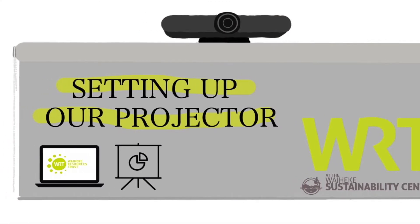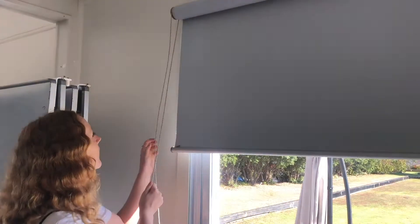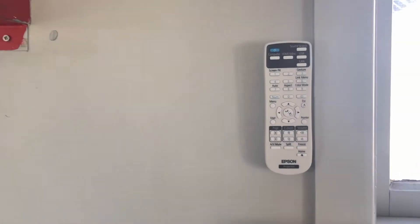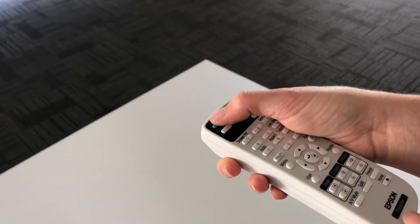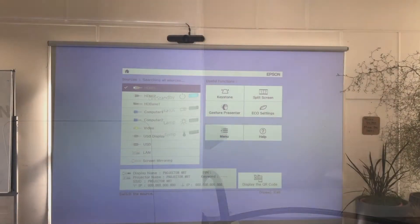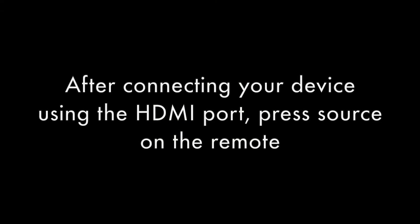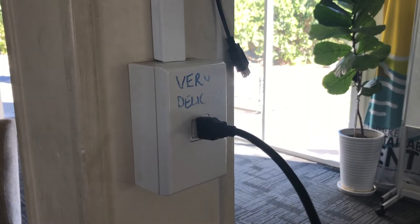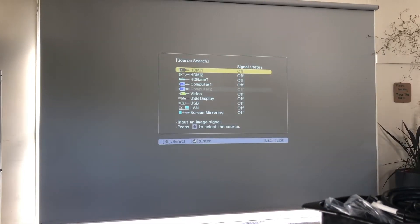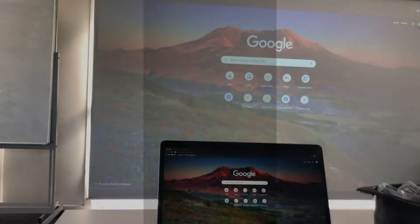In this section, we will show you how to set up the projector if you are using your own device. Using the remote located at the back of the wall, turn on the projector. If you are using your own device via the HDMI port, press source on the remote to access your computer. Once the projector has located the HDMI one, it should be good to go.